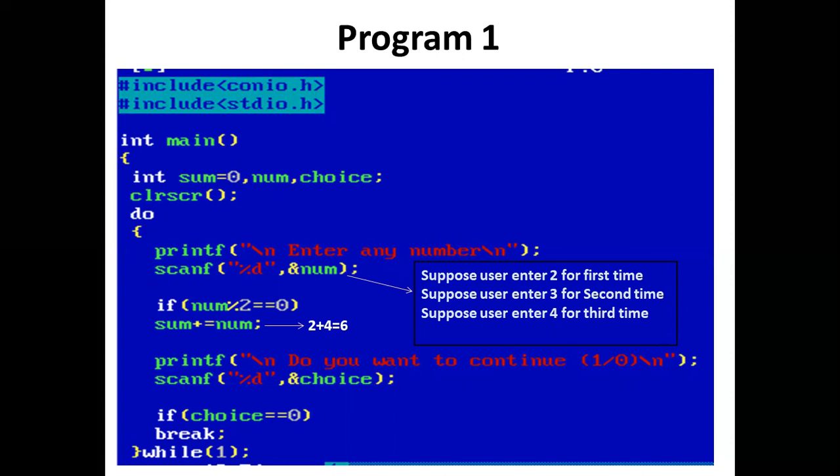Now the printf statement prints 'Do you want to continue? Press 1 or 0.' Using scanf, the user enters a value for choice. Suppose the user enters 1. Now we have an if statement — condition: 1 equal to 0, which is false. So control comes out of the if block, and the condition in while is always true.